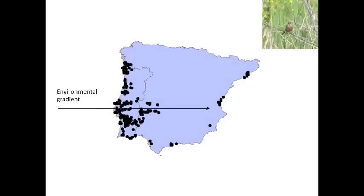Another potential pitfall caused by dispersal limitation is where an environmental variable is strongly correlated with the axes of dispersal of a species. This environmental variable is likely to show a strong relationship with the occurrence of a species, even if there is no causal relationship.